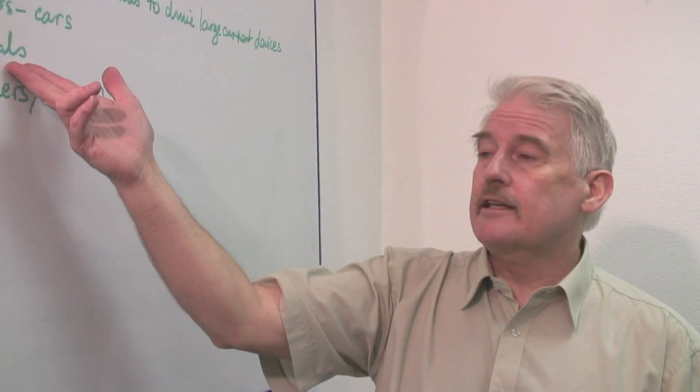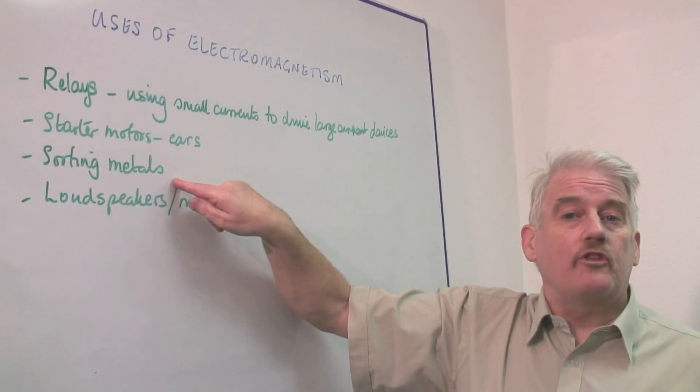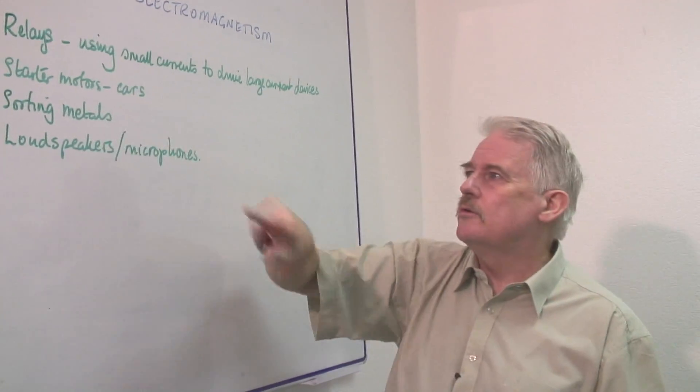Well, the steel is attracted, the aluminium is not. You need an electromagnet because once you've picked it out, you want to drop it off. You don't want it to stick permanently to your machine.